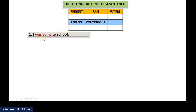If you don't know which tense to use, to determine the tense of the sentence, you need to ask yourself three questions. The first question is: what is the time of the sentence you want to make? As mentioned in previous lessons, we have three time periods — present, past, and future. For 'I was going to school,' the time is past, so we put a tick in the past box.